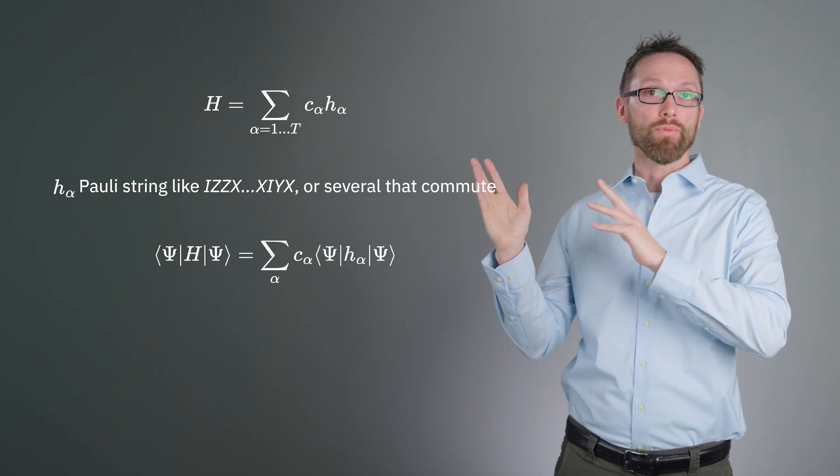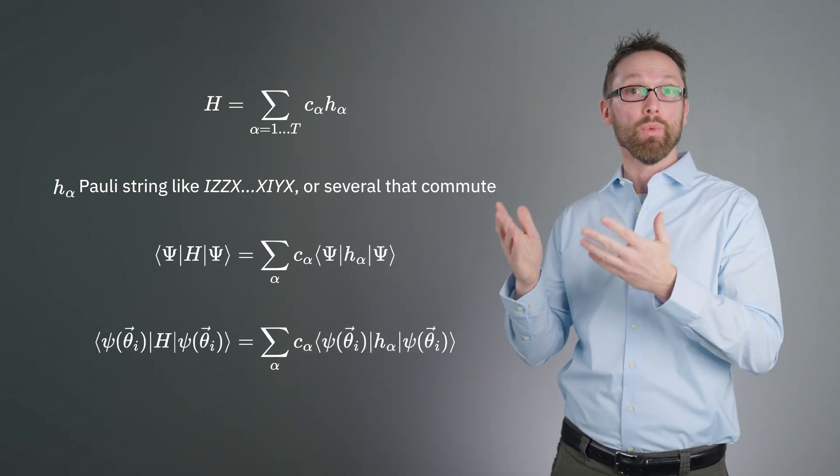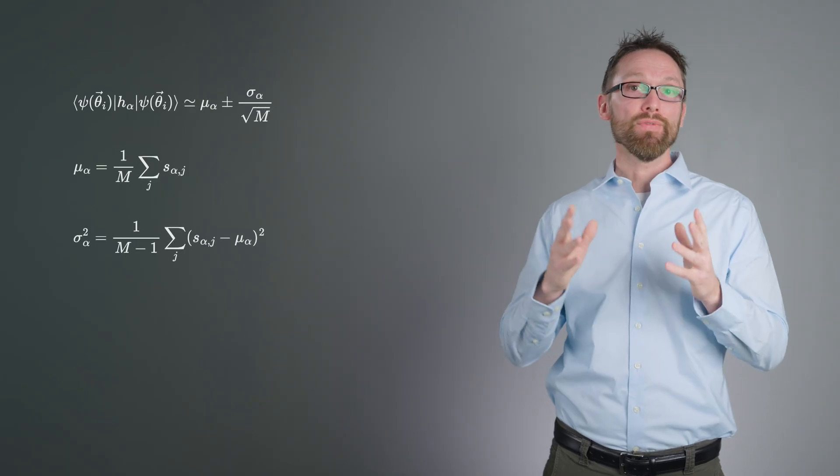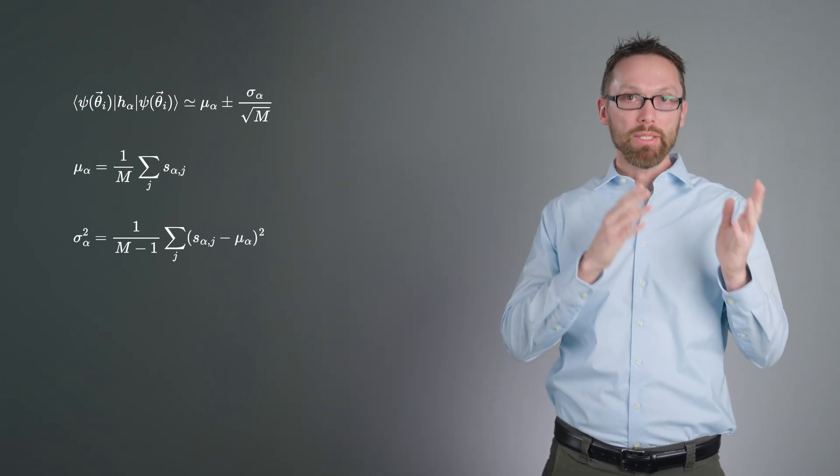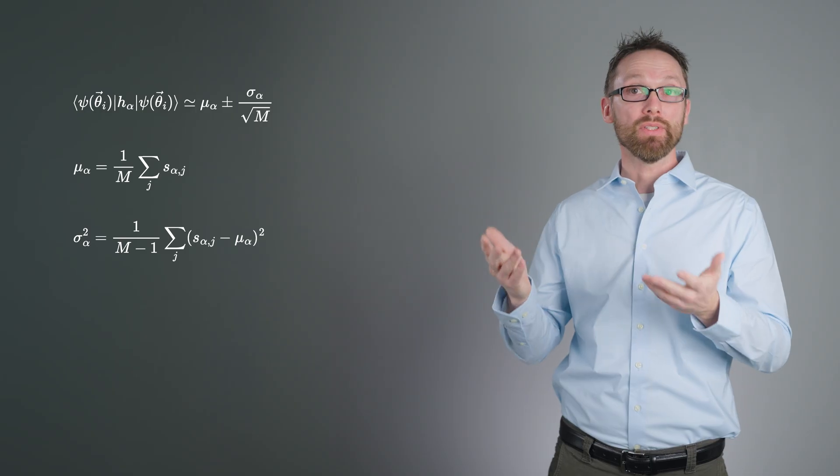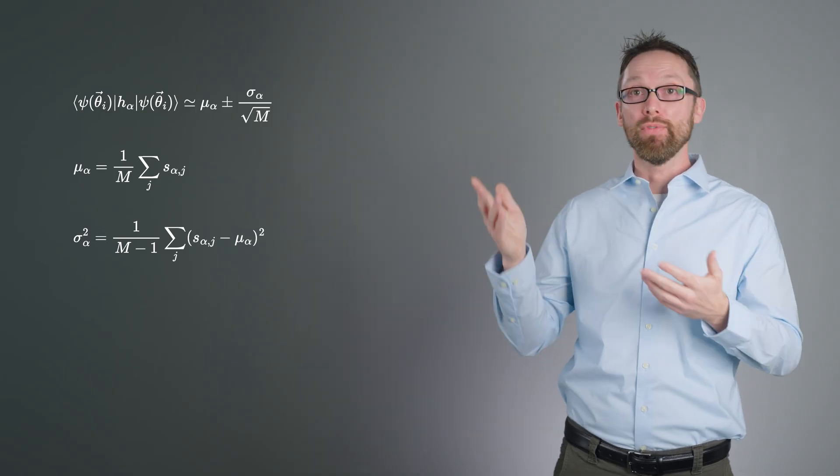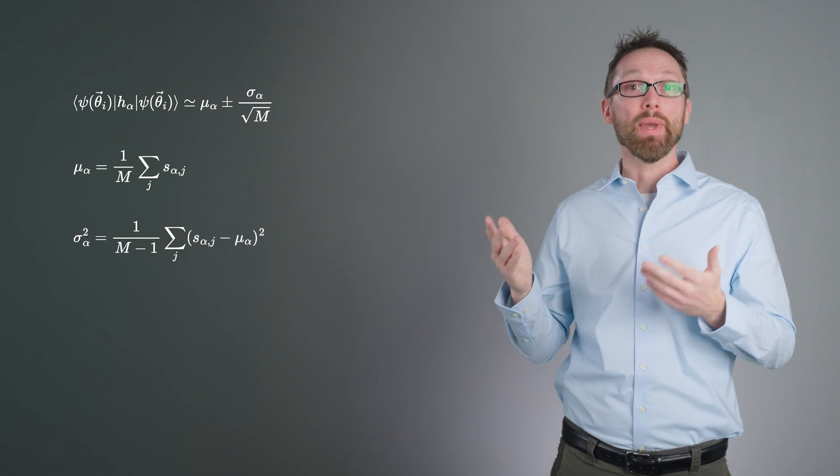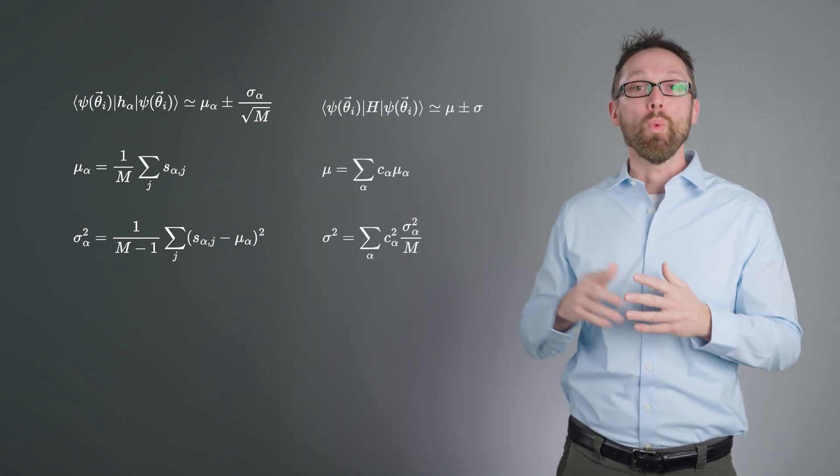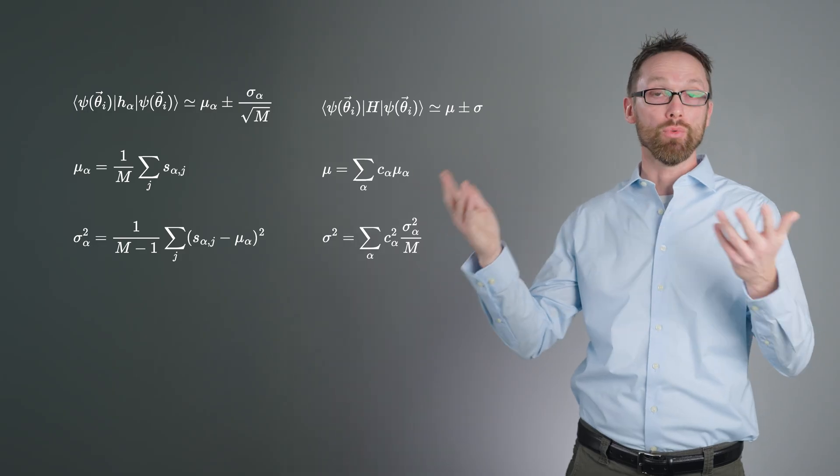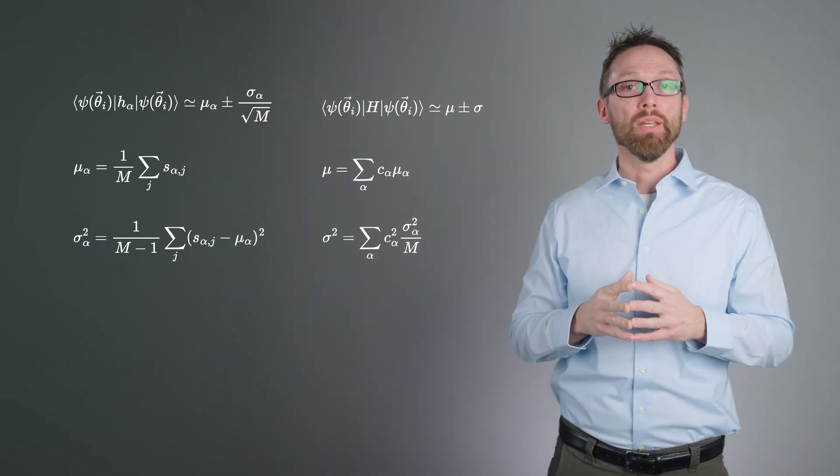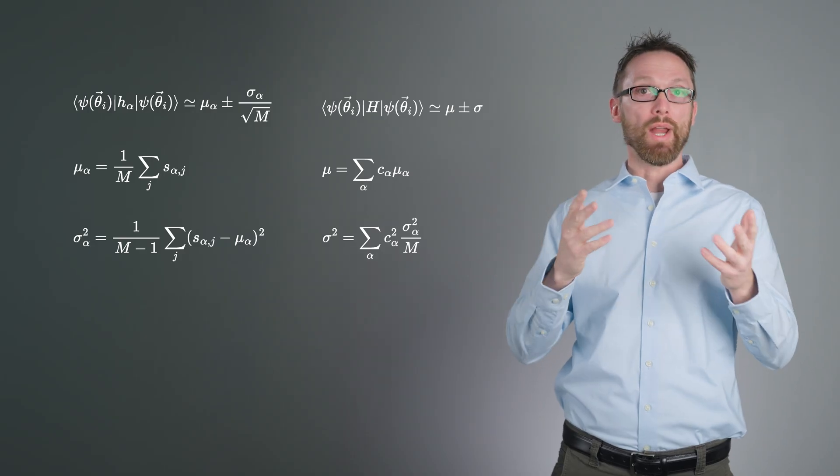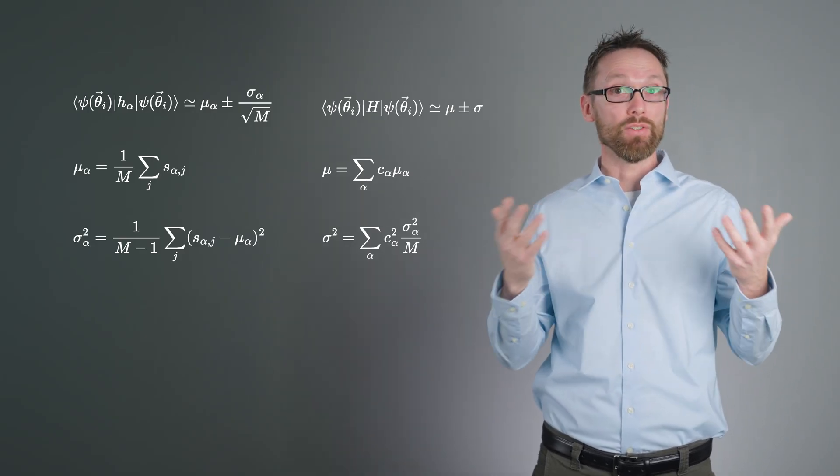This expression holds for any state ψ, but we will specifically be using it with our variational state, ψ(θ). Each of the terms, H_α, can be measured m times, yielding measurement samples S_αj, with j running from 1 to m. And returns an expectation value and a standard deviation. We can sum these terms and propagate errors through the sum.